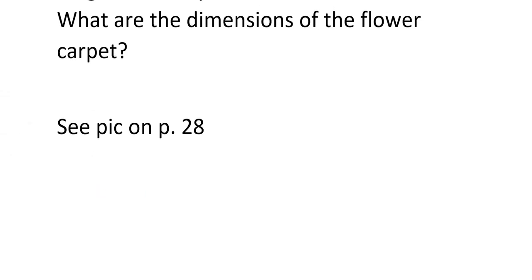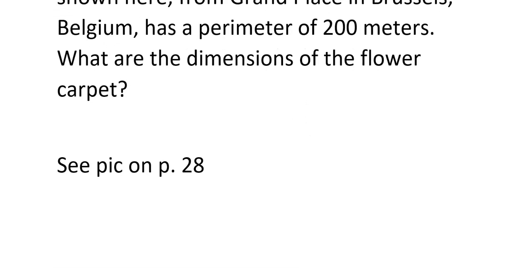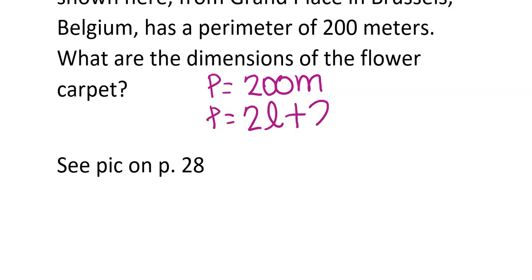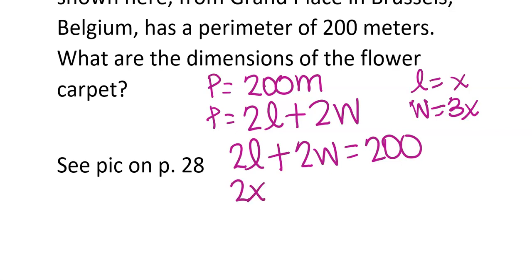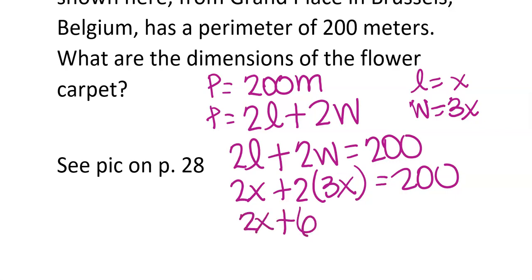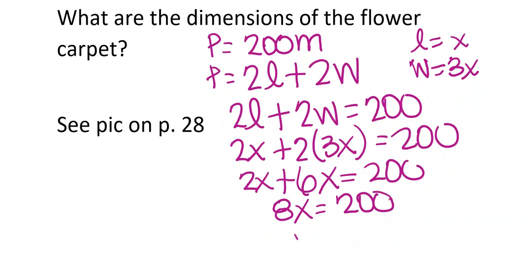The perimeter equals 200, and the formula for perimeter is 2 times the length plus 2 times the width, so 2L plus 2W equals 200. From the picture, let length equal x and width equal 3x. Substituting: 2x plus 2 times 3x equals 200, giving 2x plus 6x equals 200, so 8x equals 200. Divide by 8: x equals 25.